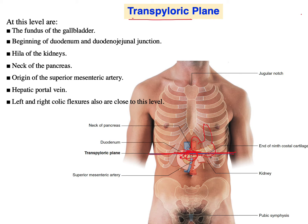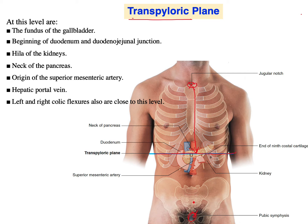This plane is considered a useful landmark because it transects many important structures. Before talking about those structures, let's discuss how to draw it. There are two ways. First, this is the jugular notch — you can feel it — and this is the symphysis pubis, which you can also feel. The midway between the jugular notch and the symphysis pubis is the transpyloric plane.